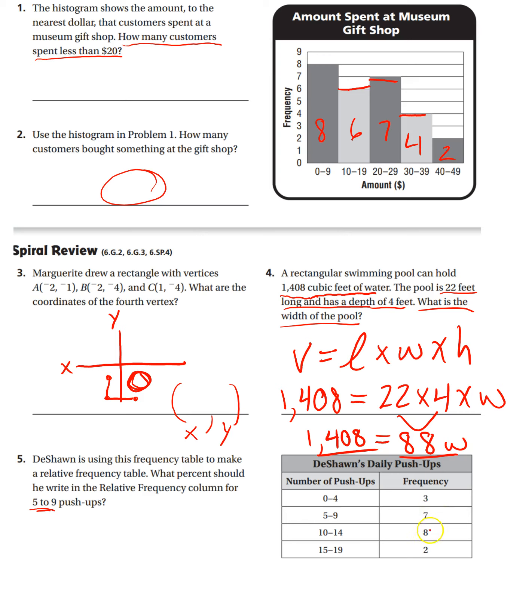So, first we need to know the total. Three plus seven is 10. Plus eight is 18. Plus two more is 20. So, the total was 20. And then five to nine, he did seven. He did that seven times.